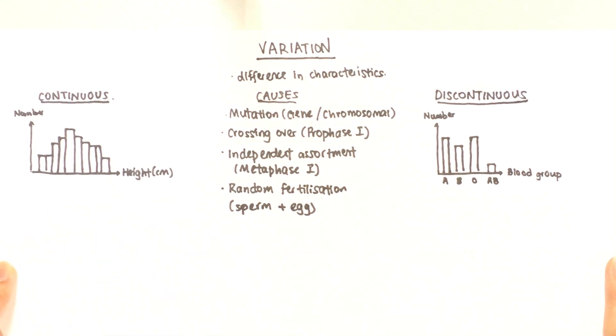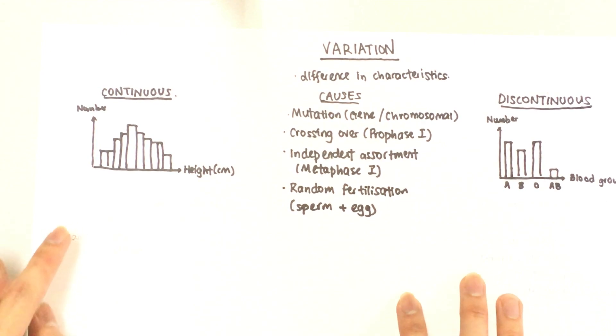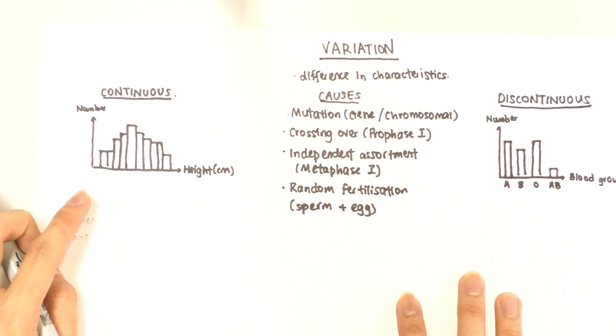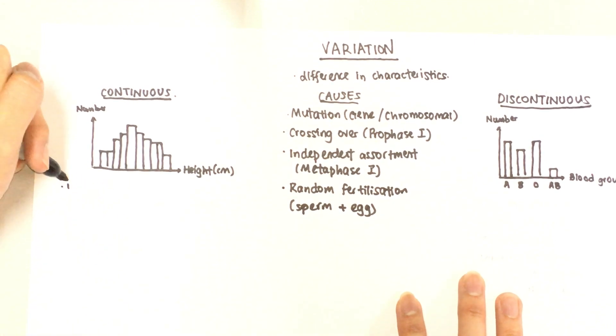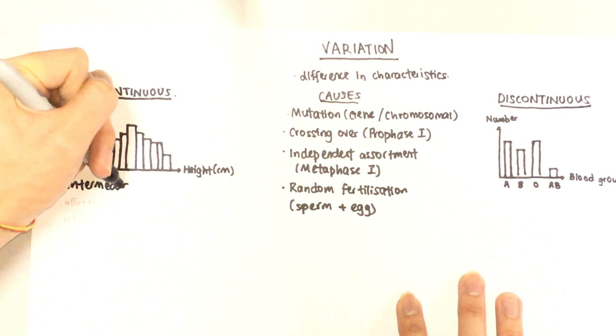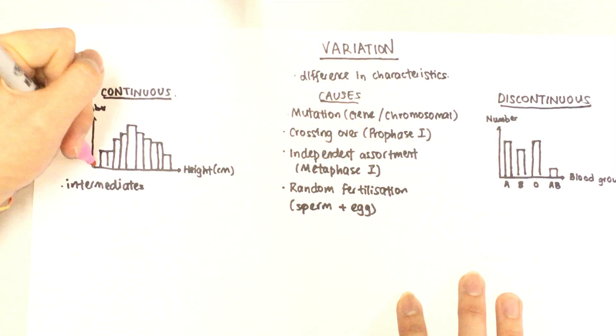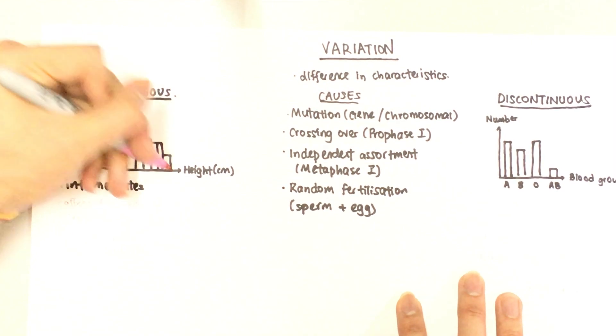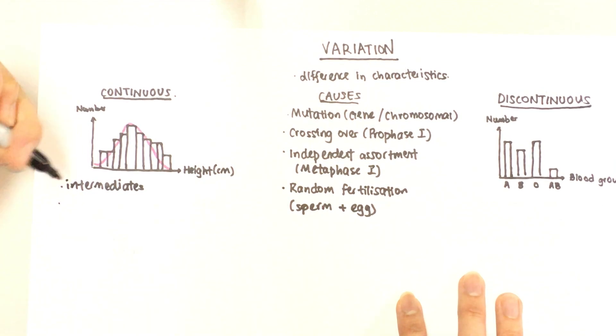Let's talk about continuous variation now. As you can see, continuous variation shows a lot of intermediates. And in this case, it can be represented using a bell curve.